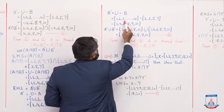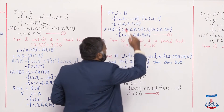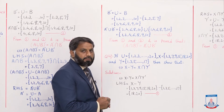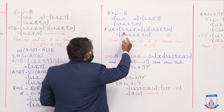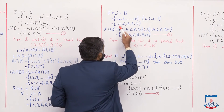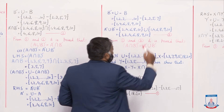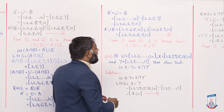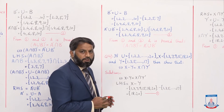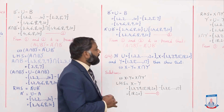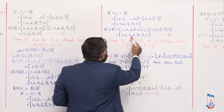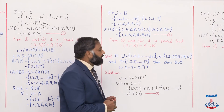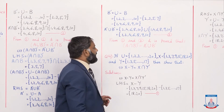Now A'∪B': A' = {2, 4, 6, 8, 10} union B' = {1, 4, 6, 8, 9, 10}. In union we write all elements of both sets, and those that are repeated are written only once. So the result is {1, 2, 4, 6, 8, 9, 10}. This is our right hand side solved. We call it equation 2.